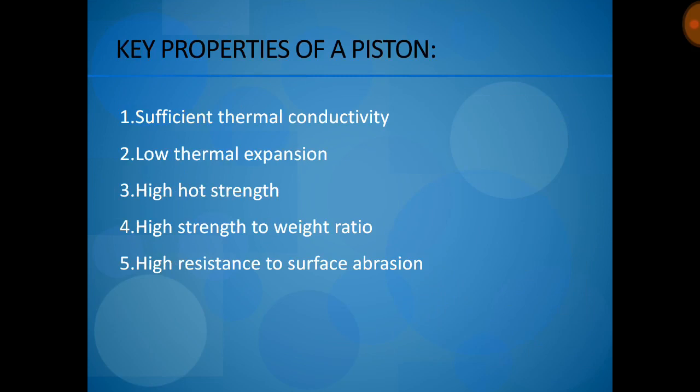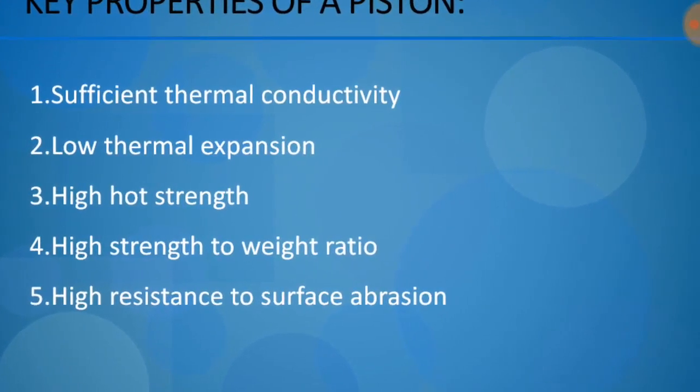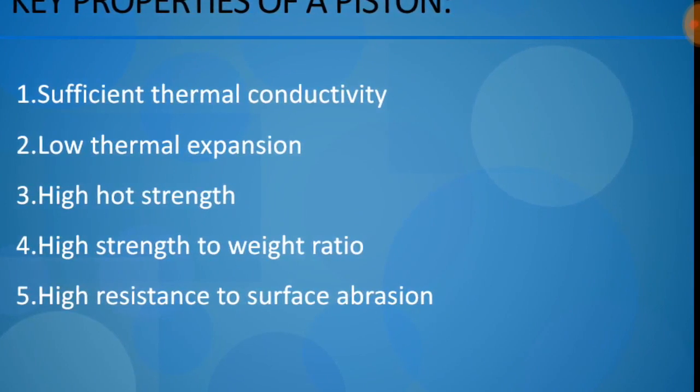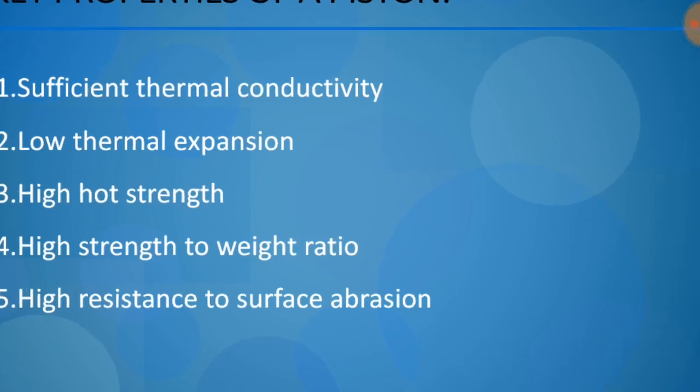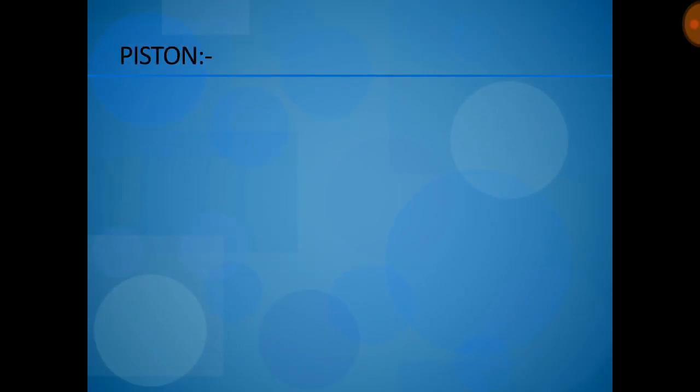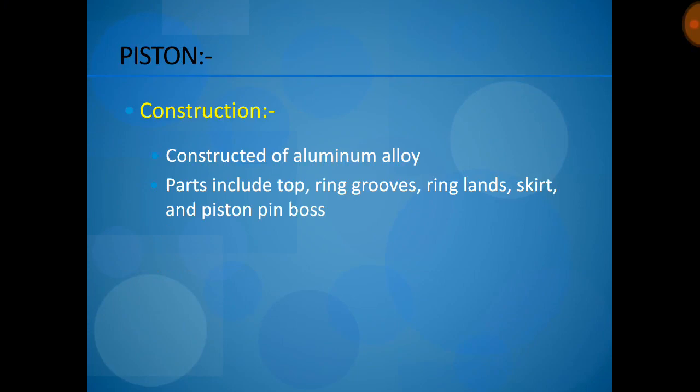The key properties of the piston are: sufficient thermal conductivity, low thermal expansion — meaning minimum heat is absorbed and released to the atmosphere — high strength, high strength-to-weight ratio, and high resistance to surface abrasion. The piston is constructed using aluminium alloy.